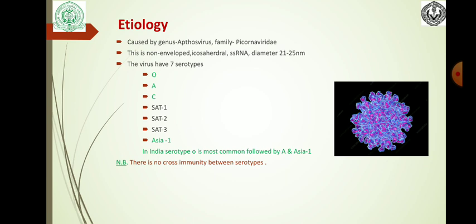This disease is caused by the Aphthovirus from the family Picornaviridae. It is non-enveloped, icosahedral, single-stranded RNA, having a diameter of 21 to 25 nanometers. The virus has 7 serotypes: O, A, C, SAT1, SAT2, SAT3, and Asia 1. In India, serotype O is most common, followed by A and Asia 1. There is no cross-immunity between the serotypes.